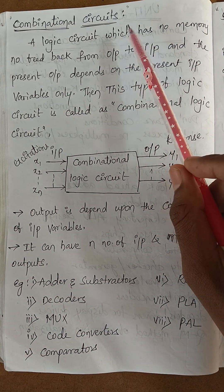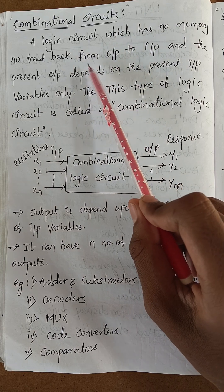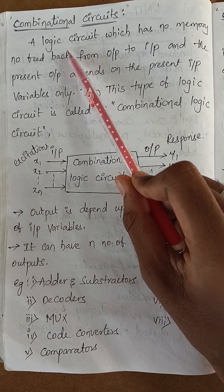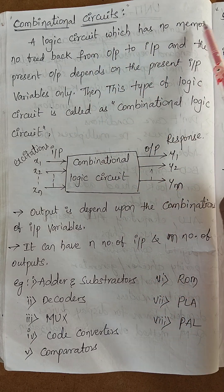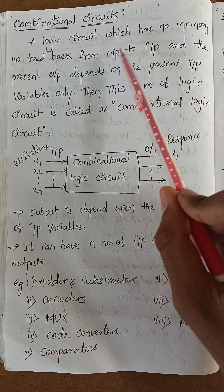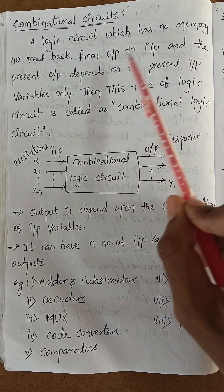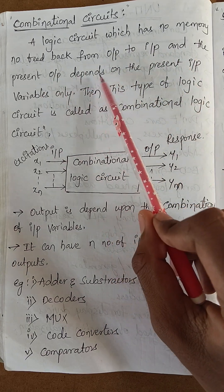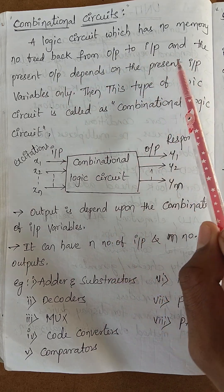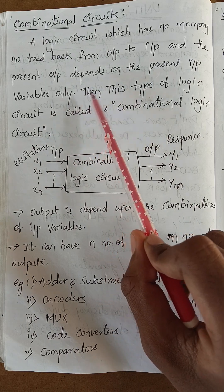First of all, a combinational circuit is a logic circuit which has no memory, no feedback from output to input, and the present output depends on the present input variables only.